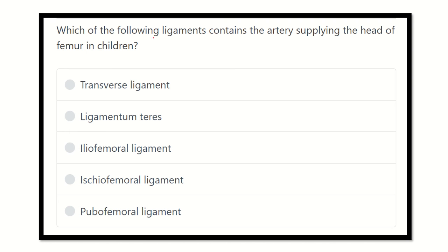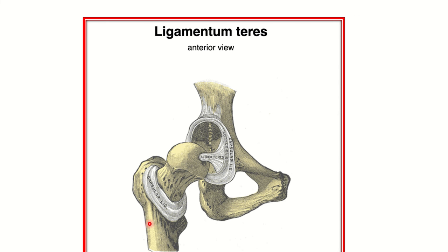Which of the following ligaments contains arteries supplying the head of the femur in children? First we have to find out the head of the femur, then the ligament attached to it, and the artery which lies within that ligament. The options are: transverse ligament, ligamentum teres, iliofemoral ligament, ischiofemoral ligament, and pubofemoral ligament.